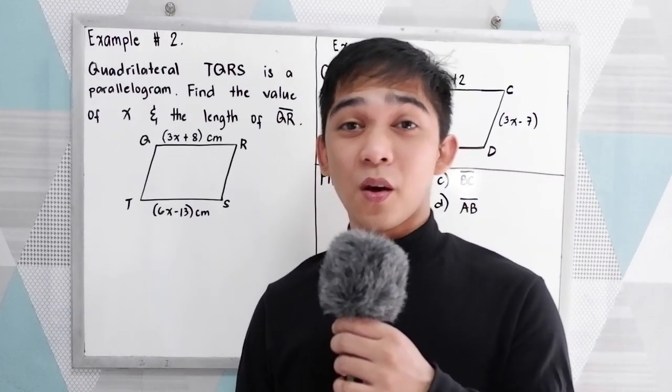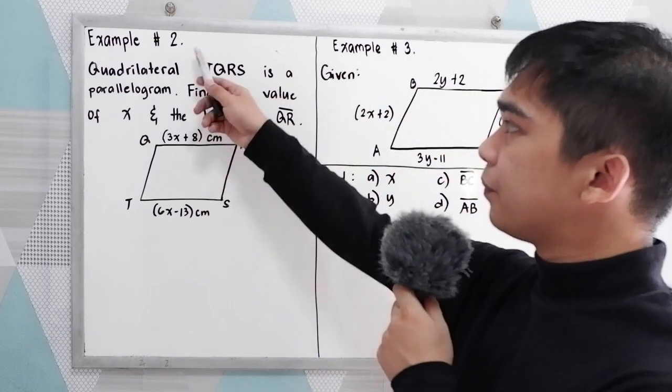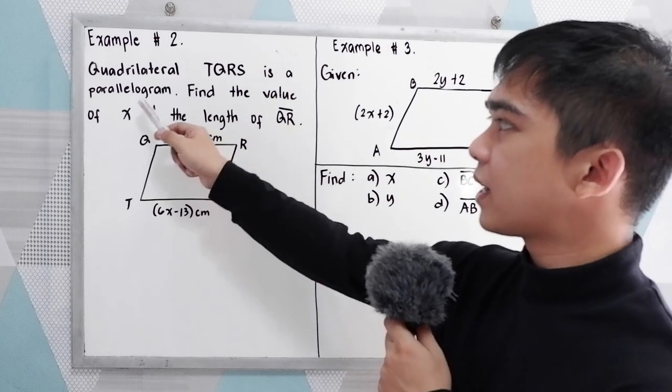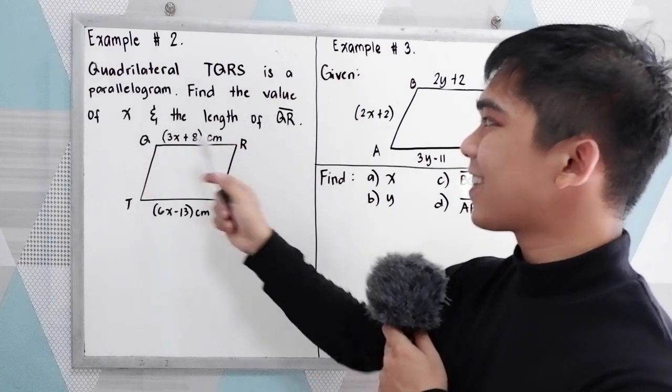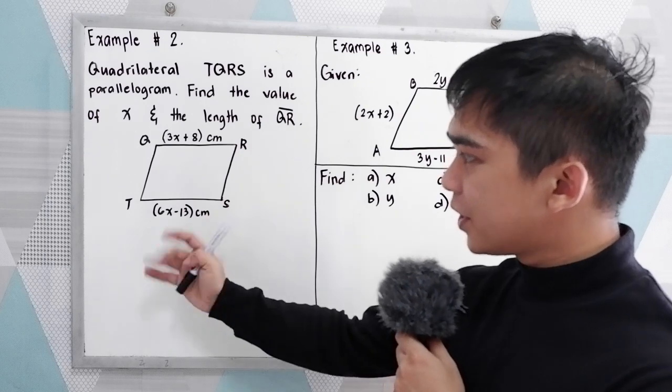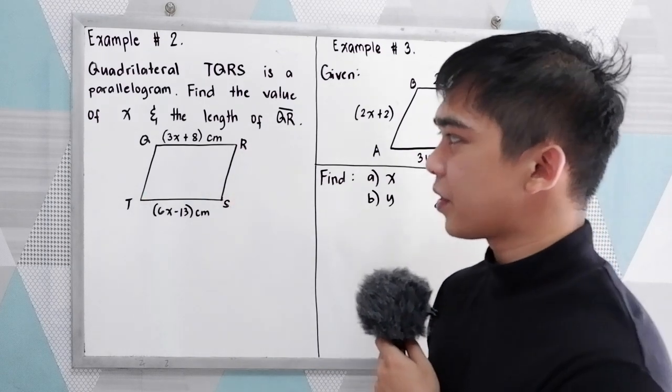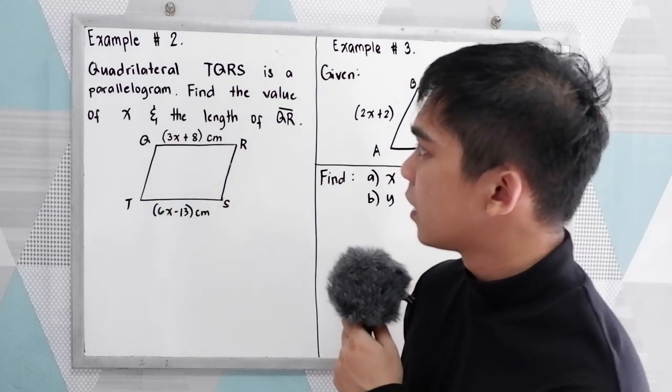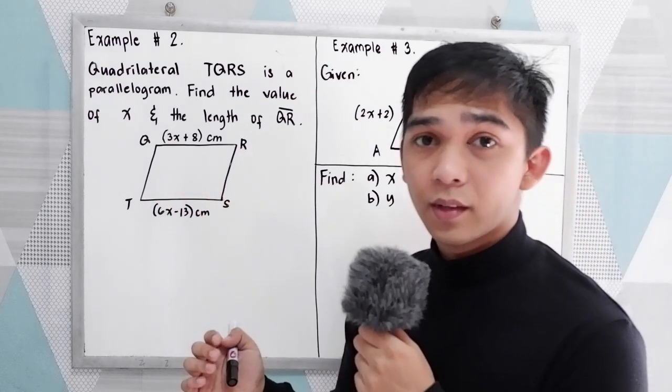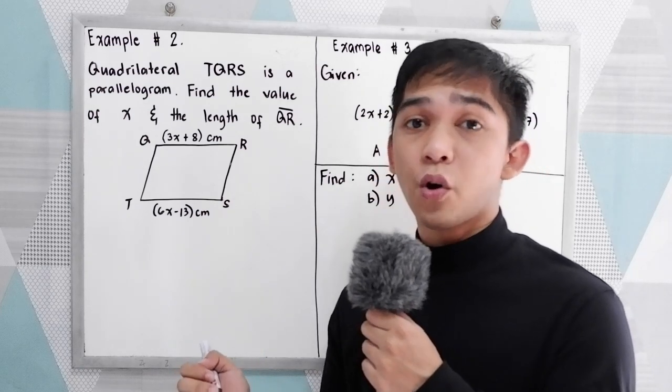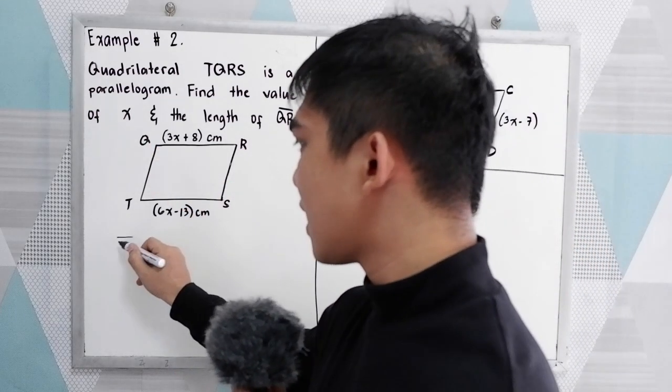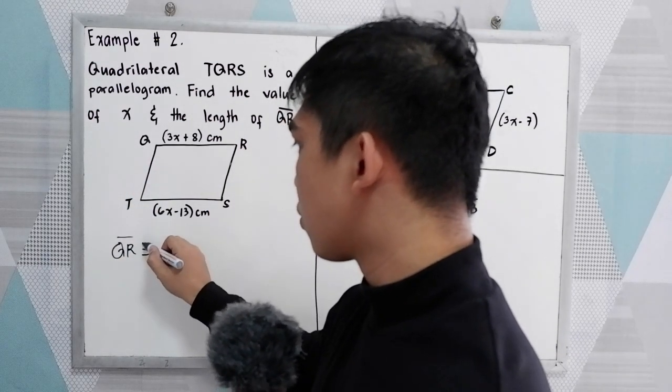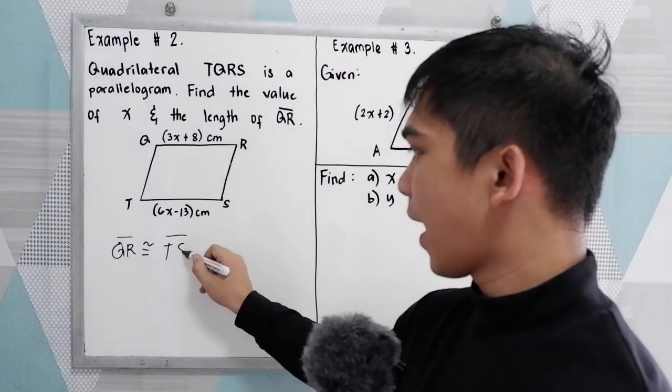Now let us proceed to example number 2. Quadrilateral TQRS is a parallelogram. Find the value of x and the length of QR. So we have here TQRS. The parallelogram TQRS and the given length of each side. Now this is a parallelogram. Property number 1. Opposite sides are congruent. So we know that QR is congruent to TS.